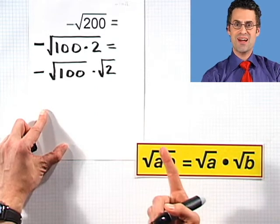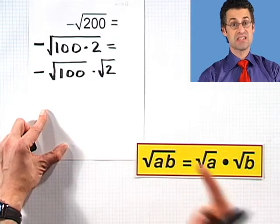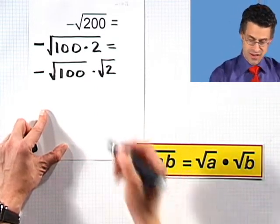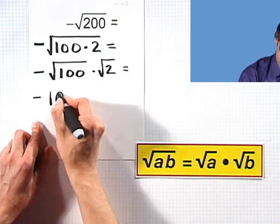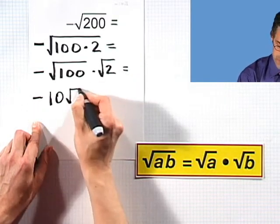But the square root of 100, we can actually figure out. That's just 10, because 10 squared is 100. So in fact, this equals negative 10 square root of 2.